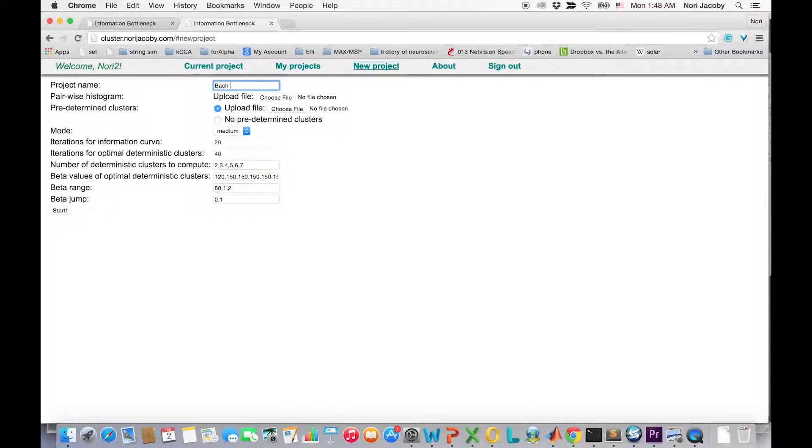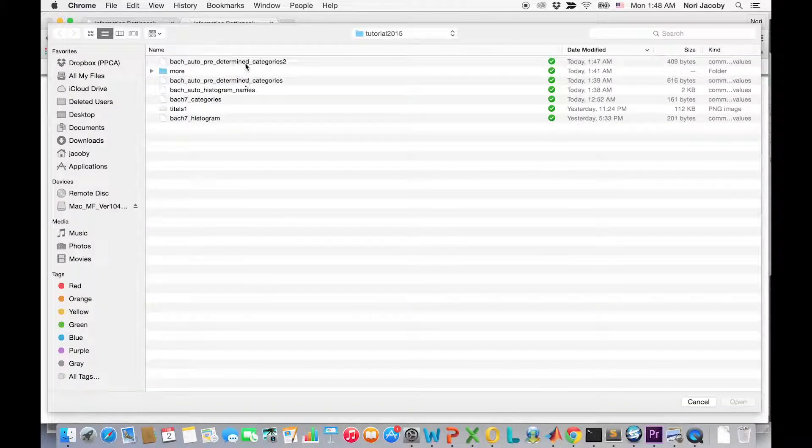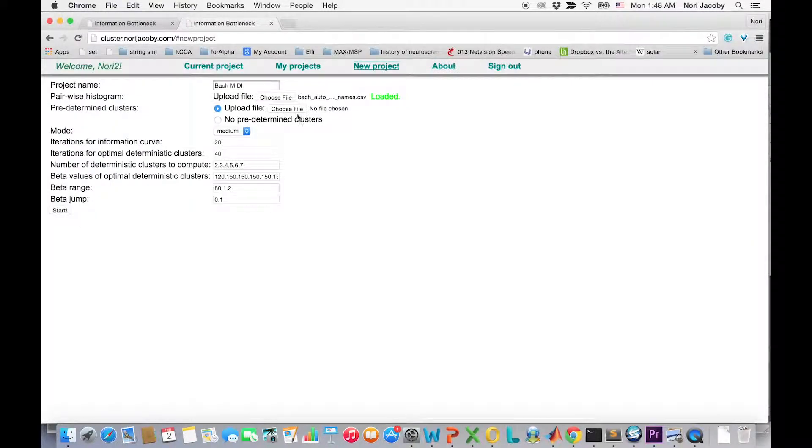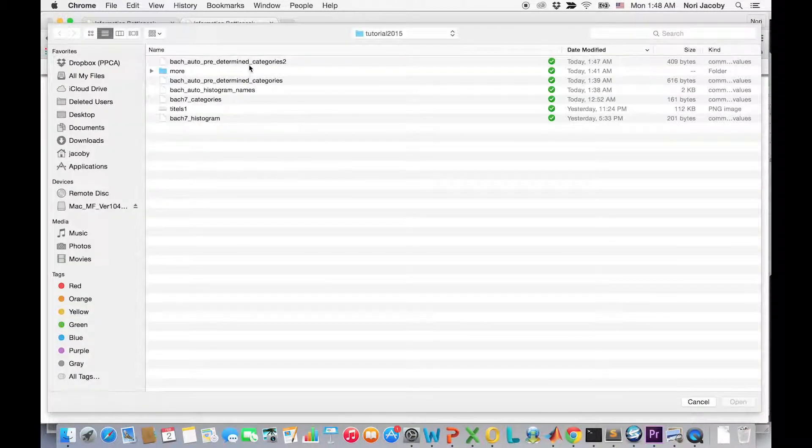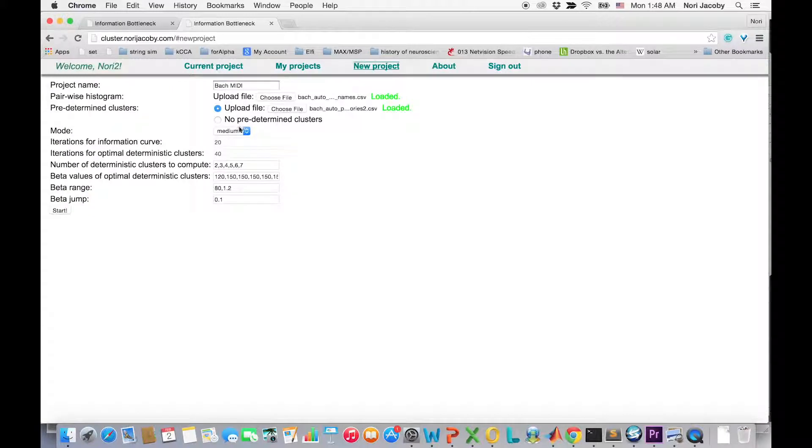We create a new project and upload the joint histogram file. And we also upload the predetermined categories file. We select slow and accurate running mode and hit start.